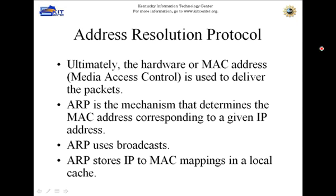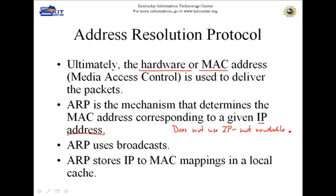ARP, just briefly. Ultimately, when we're addressing a packet, we've got to have the hardware or MAC address — that stands for Media Access Control — to properly address the frame header. ARP is the mechanism that gives us the MAC address corresponding to a given IP address. It does this by broadcasting. It does not use IP, so therefore it's not routable. It's only going to occur on the local network.